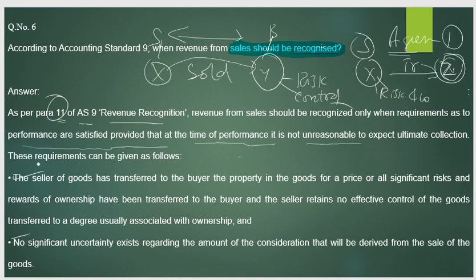The key point of the first condition is: once you transfer the goods, the risk, ownership, and control should be transferred to the buyer. Only then is it recognized as a sale. The second condition is: no significant uncertainty exists regarding the amount of consideration that will be derived from the sale.